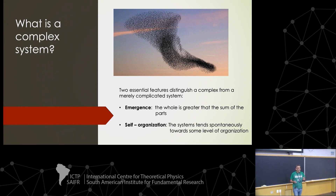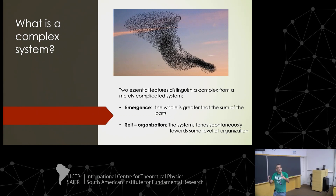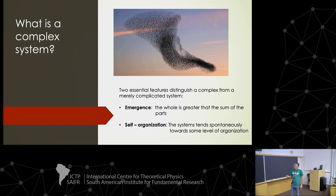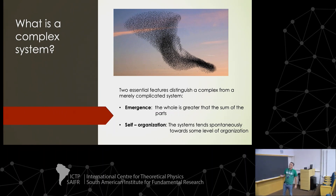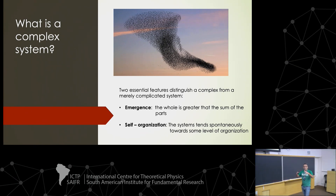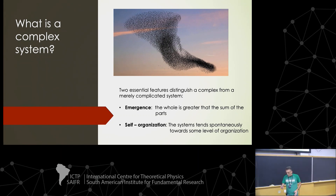A complex system has two essential features that distinguish it from a very complicated system. A complex system has emergent behavior — it means that the whole is greater than the sum of the parts. And also, it is self-organized. There is no central authority, and the system tends to spontaneously organize at some level, displaying spatiotemporal patterns.